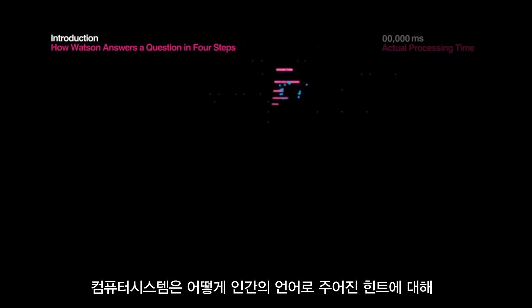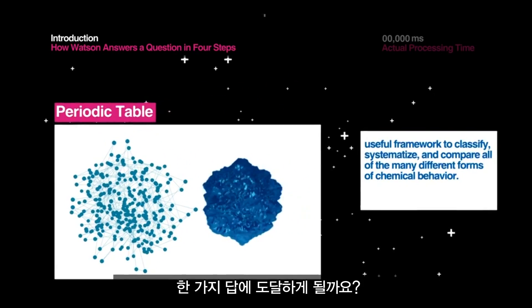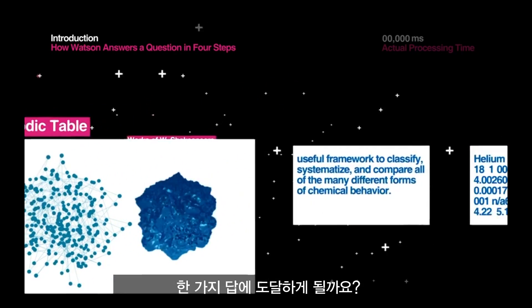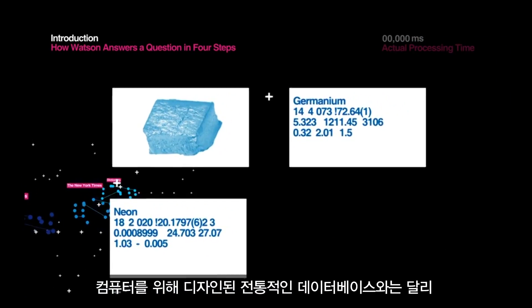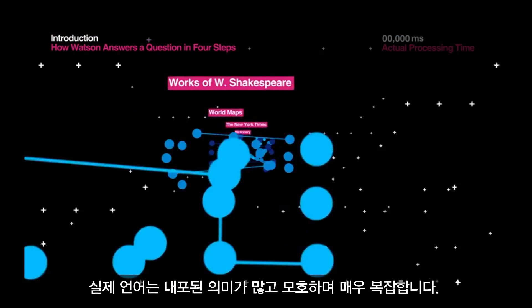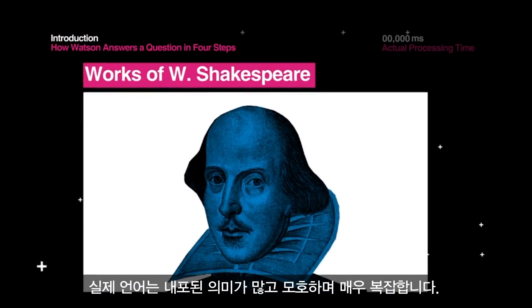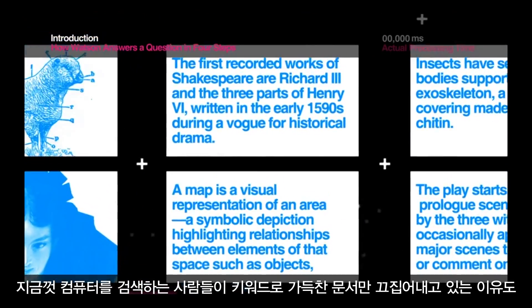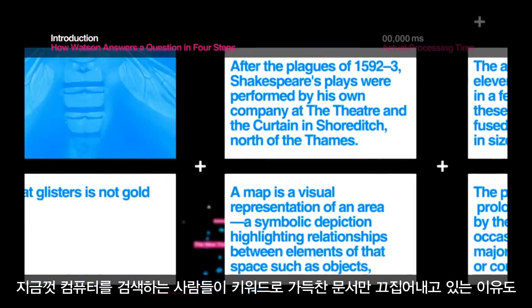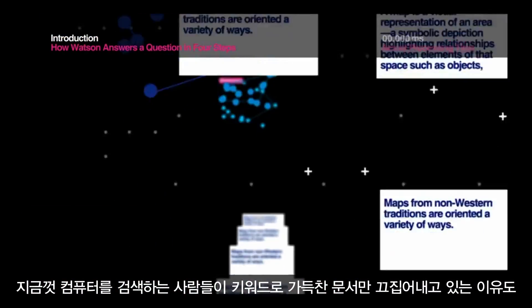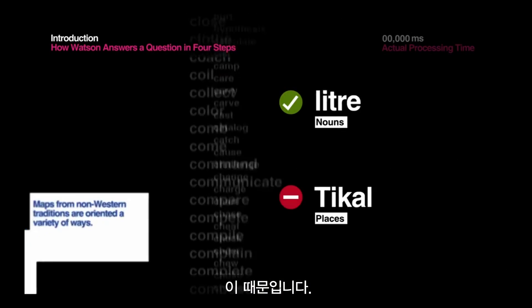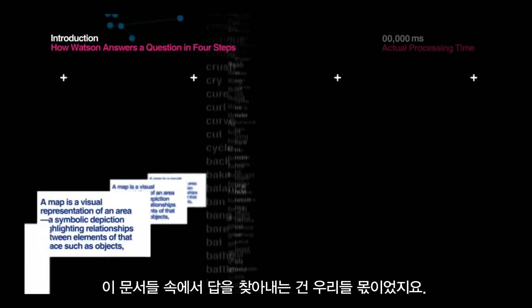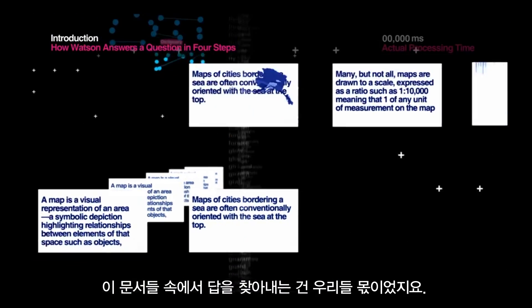How does a computing system reach a single answer to clues posed in human language? Unlike traditional databases designed for computers, real language is implicit, ambiguous, and full of complexity. That's one of the reasons why, until now, computer searches have only returned documents filled with keywords — it's been up to us to find the answers in those documents.